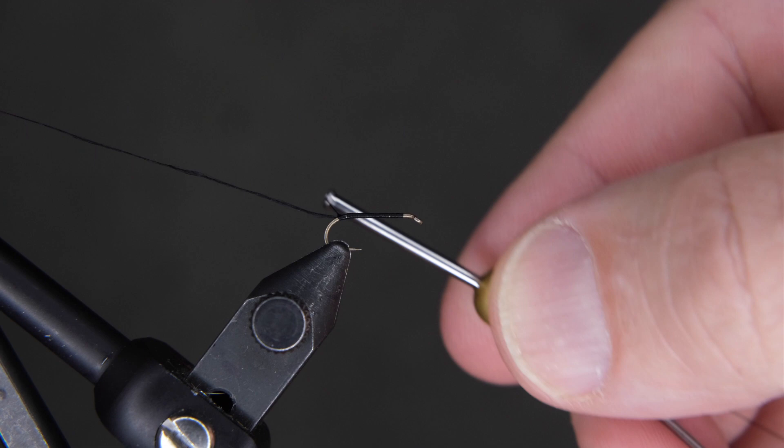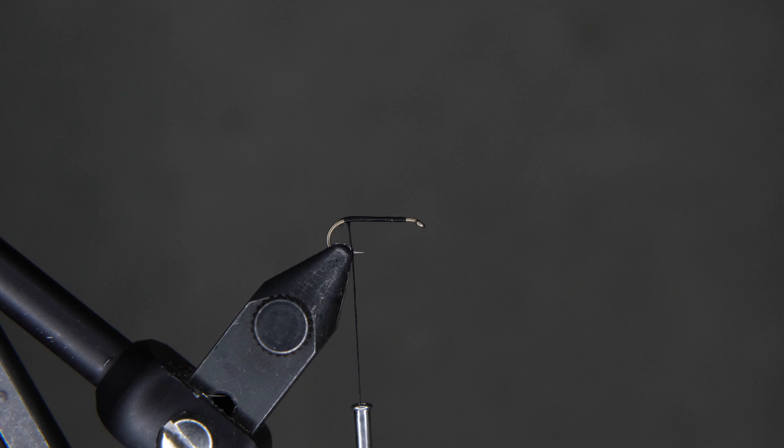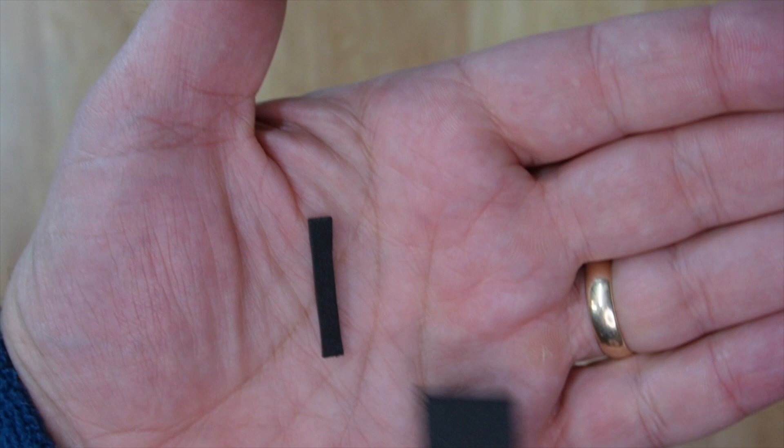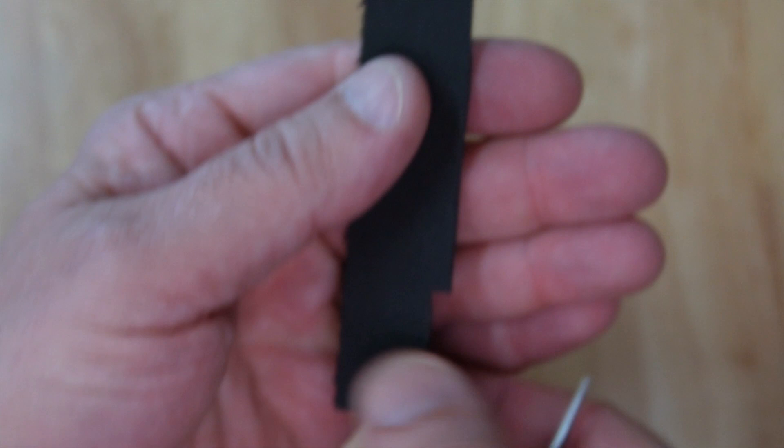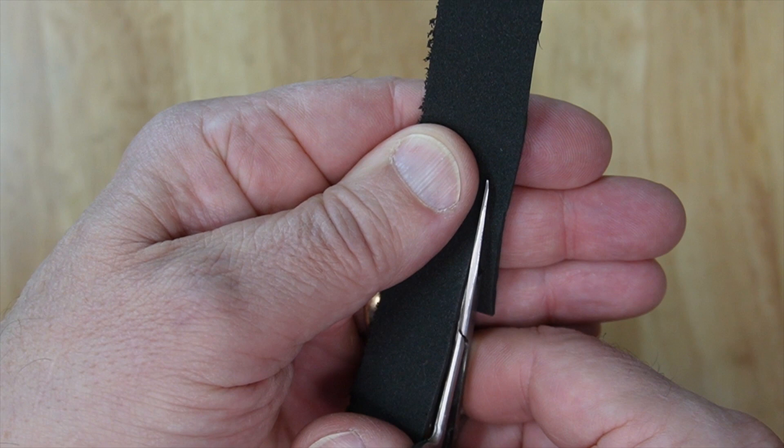Lift your tag end and make that thread lay nicely on the hook, then come in and clip your tag end off. Take your black foam. This is the size piece you're going to need - about one to one and a half inch, about a quarter inch wide. Once you get your first piece cut on your foam, it's easy to use that as a template to cut your next piece.